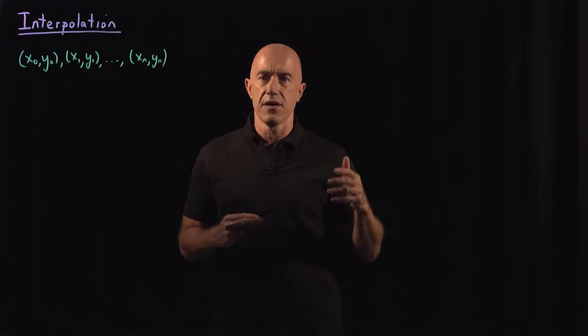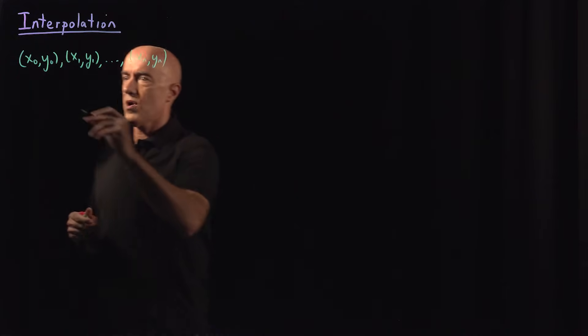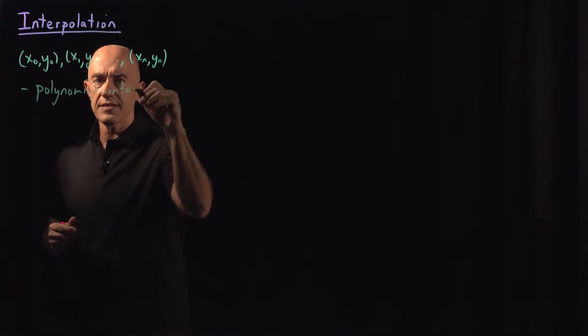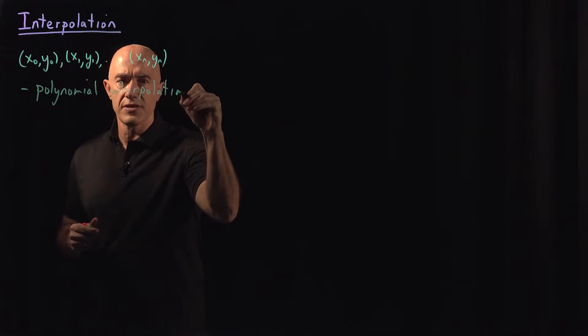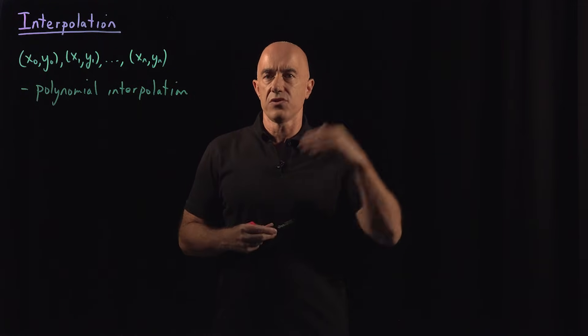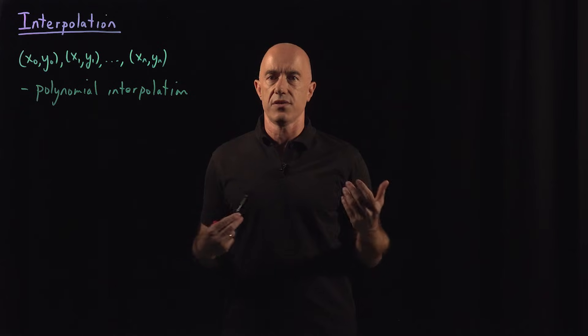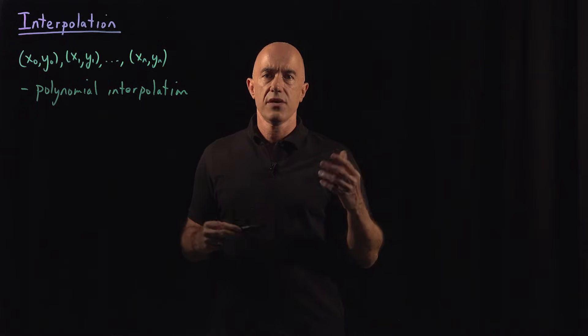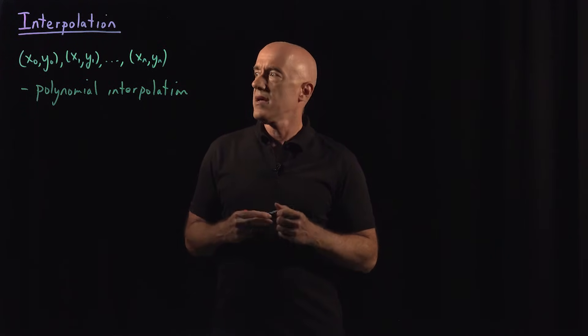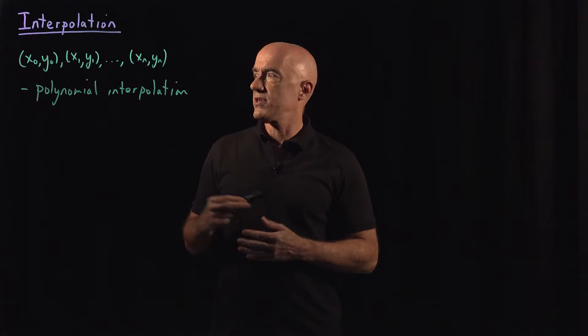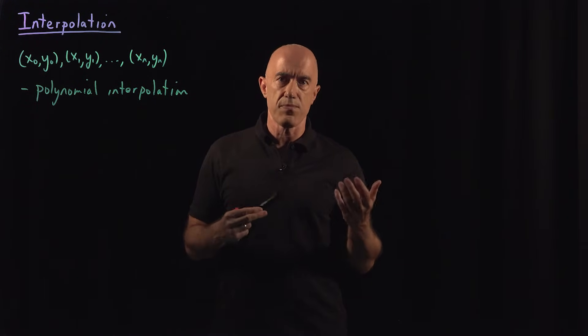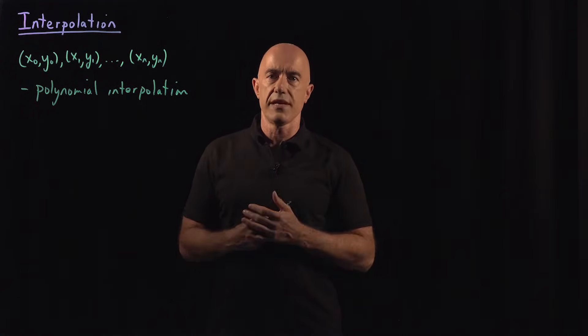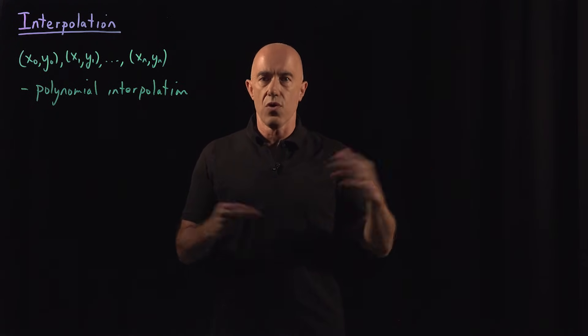There's three main types of numerical interpolation. One would be called polynomial interpolation. This is a global type of interpolation. So if there were only two points here, then you can draw a straight line between the two points, and use that as your interpolating function. If there were three points, you can fit three points by a quadratic polynomial and use that as your interpolating function. Here we have n plus one points. You can fit n plus one points by a polynomial of degree n. So this is a global interpolating function, because there's only one function then that goes through all the points.